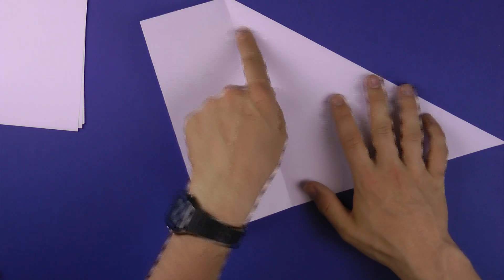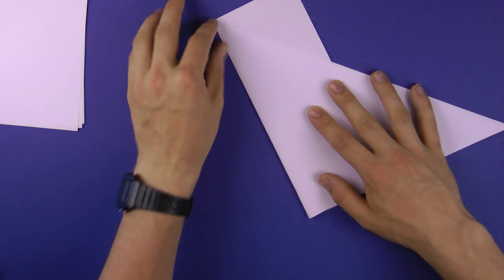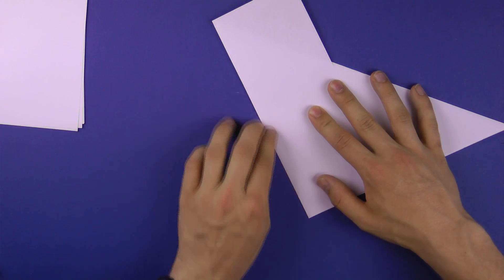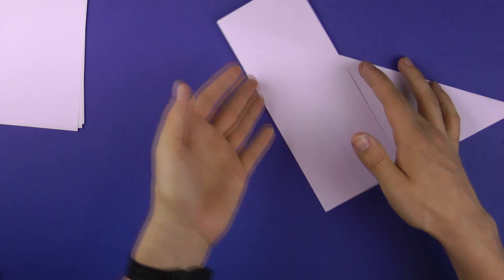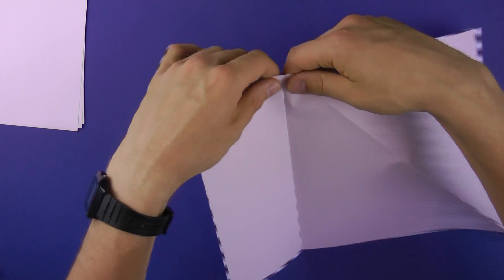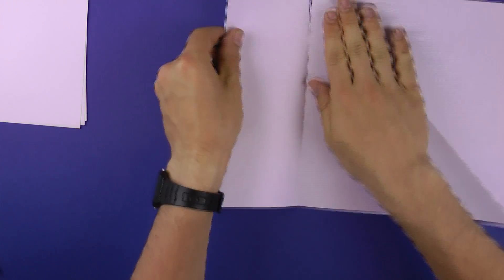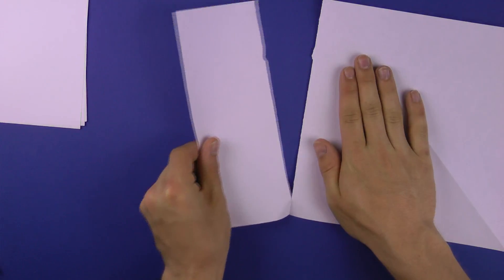You can either now use a pair of scissors or fold sharply. Use your nail for example and now if you have a ruler or simply pull and you have a nice square.